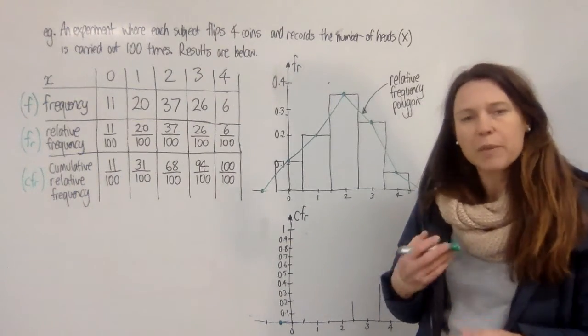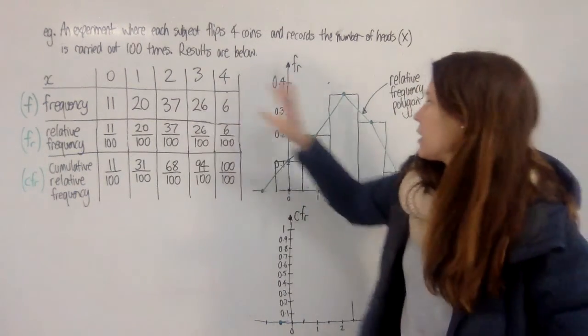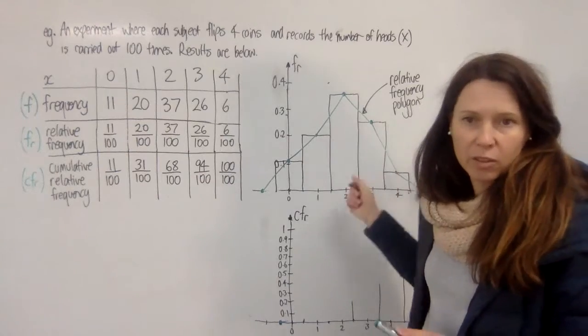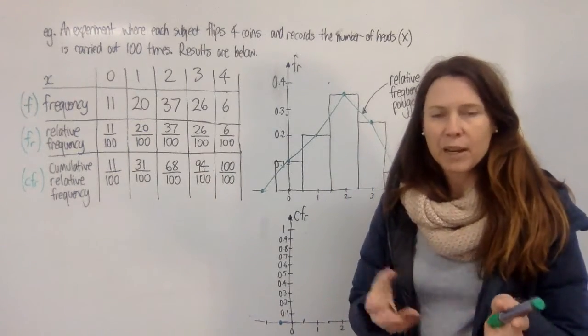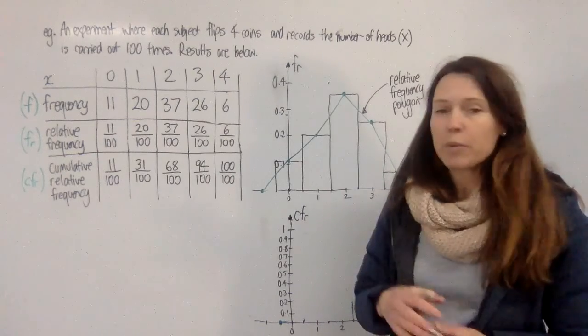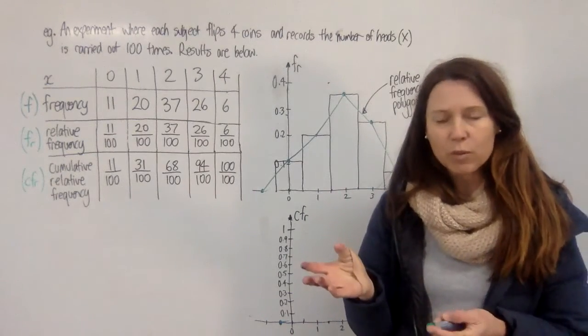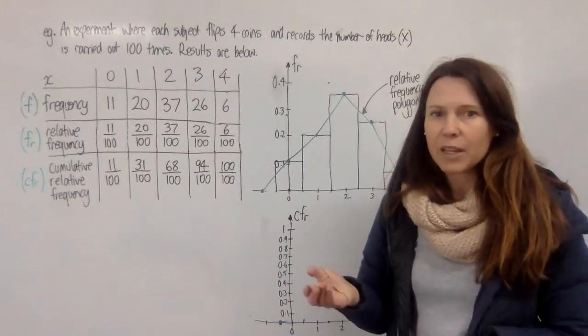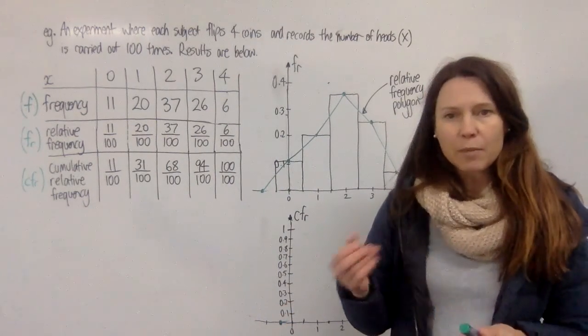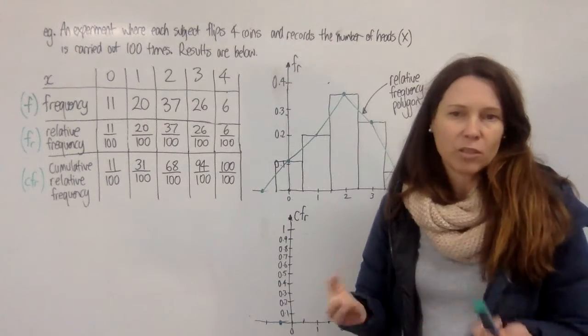Now, we've already drawn a probability distribution table, histogram, and polygon using theoretical data, which is where we just estimate what might happen based on logic. And the example we used was tossing a coin four times, or four coins at once, and looking at how many heads we might get. And we came up with some probabilities based on logic.